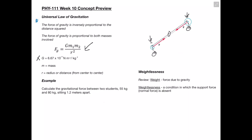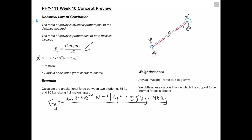In the example, it says: calculate the gravitational force between two students, 55 kilograms and 80 kilograms, sitting 1.2 meters apart. We're just going to plug straight into this equation. The force of gravity is going to be equal to our constant, multiplied by our two masses — 55 kilograms and 80 kilograms — divided by the distance between their centers squared, which is 1.2 meters squared. When we work this out, we get a force of about 2 times 10 to the negative 7 newtons.